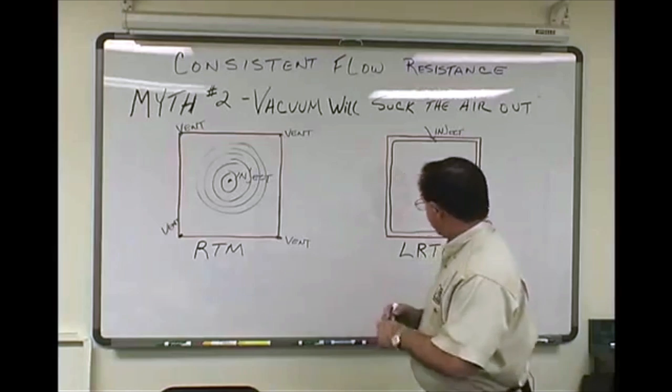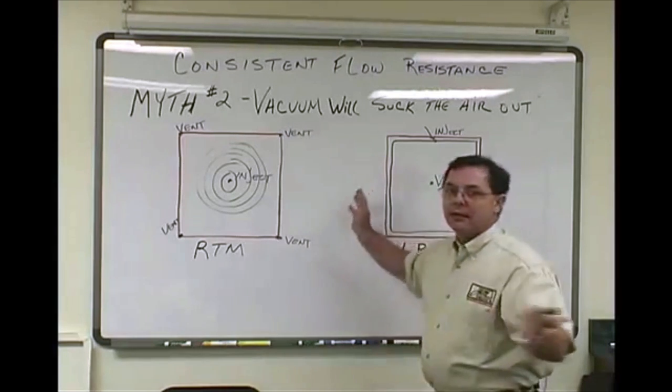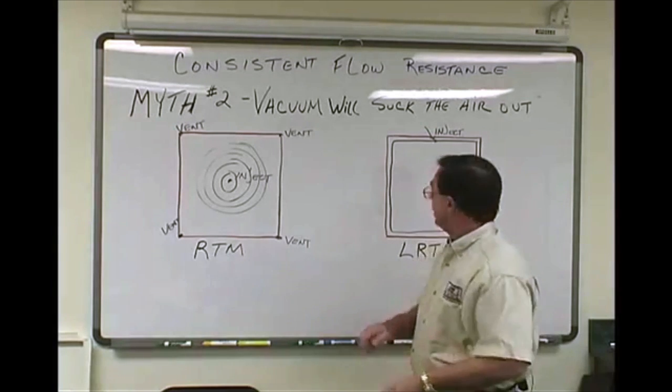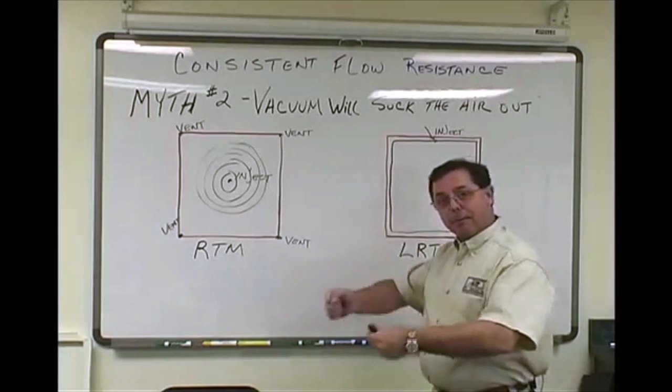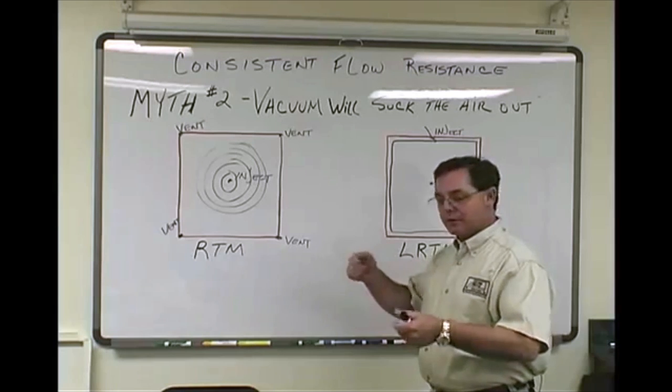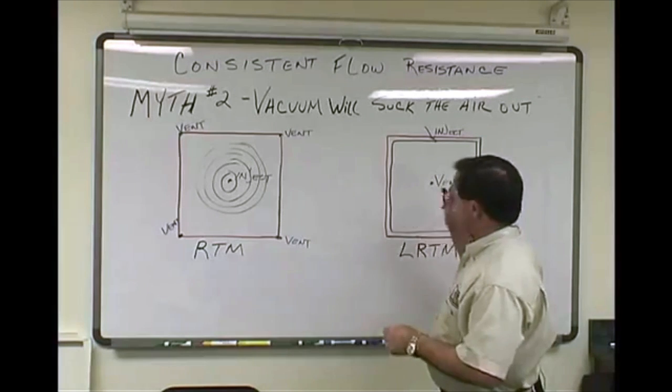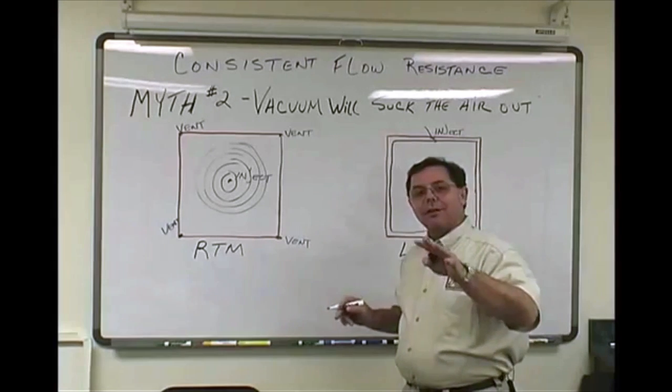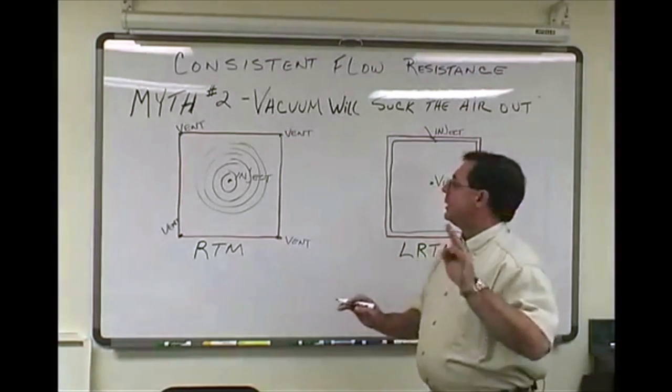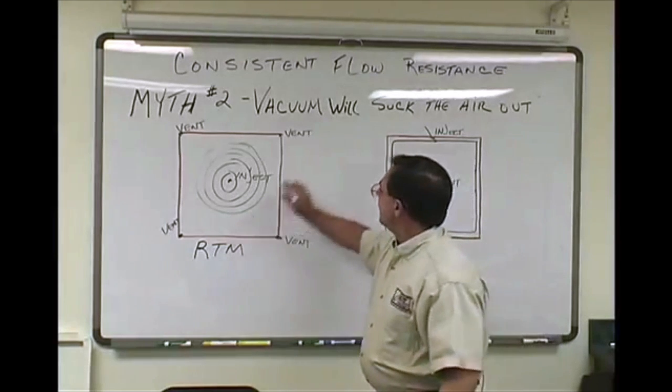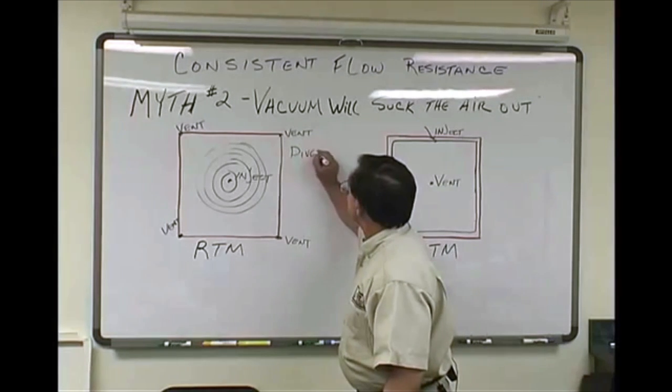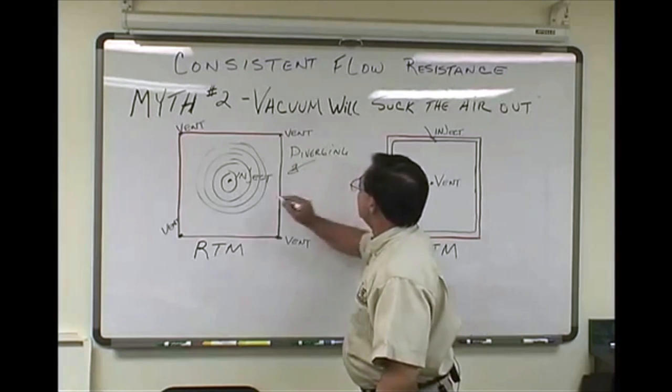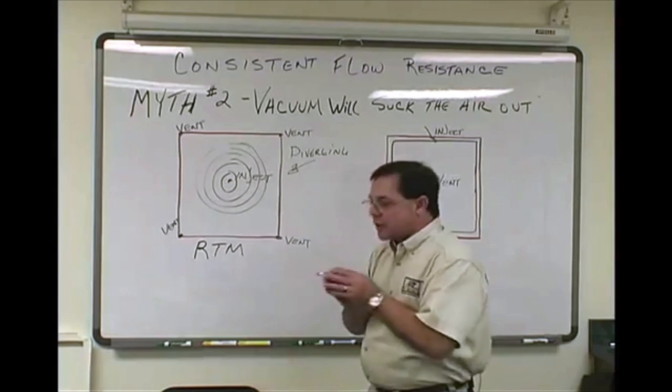But think about what's going on here. We inject in the center, the resin then flows outward in a typical ring fashion filling. But the point is, it's diverging away from the injection point. RTM light - what's the difference there? Basically, it's the same mold, lighter structure because it doesn't need to hold back as much pressure. We've drawn atmosphere out by pumping some atmosphere out with a vacuum pump.